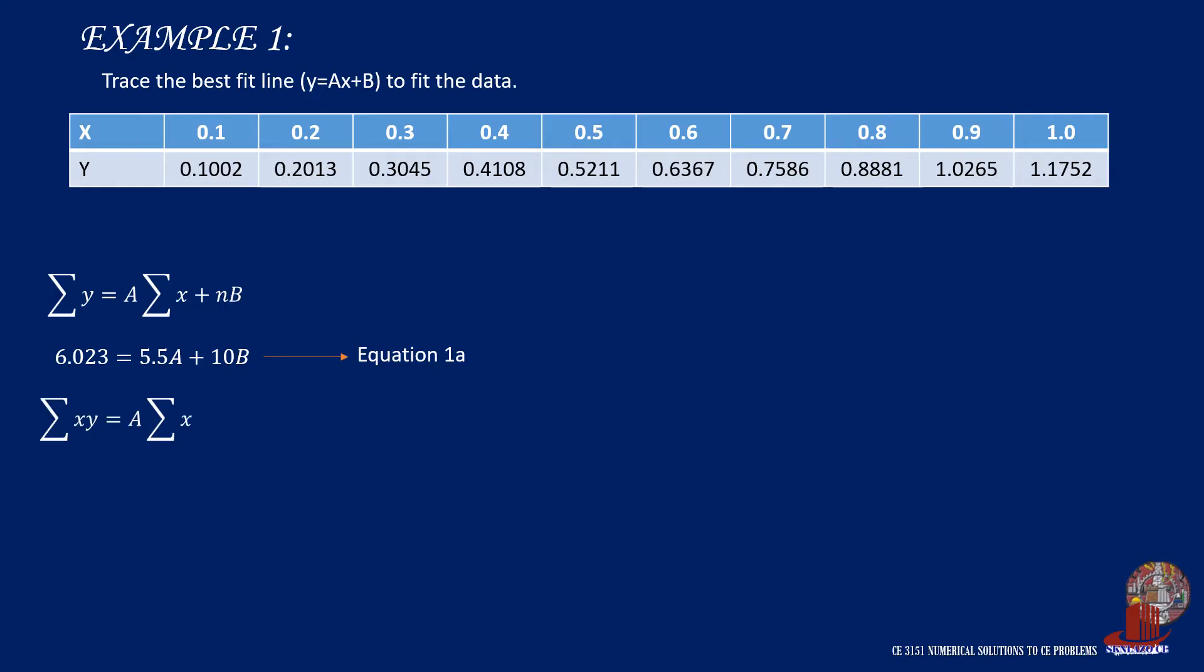The second equation will be given values as 4.28907 equals 3.85a plus 5.5b. This is equation 2a. With two equations for the two unknowns a and b, we can use either elimination or substitution to find the values of the variables.